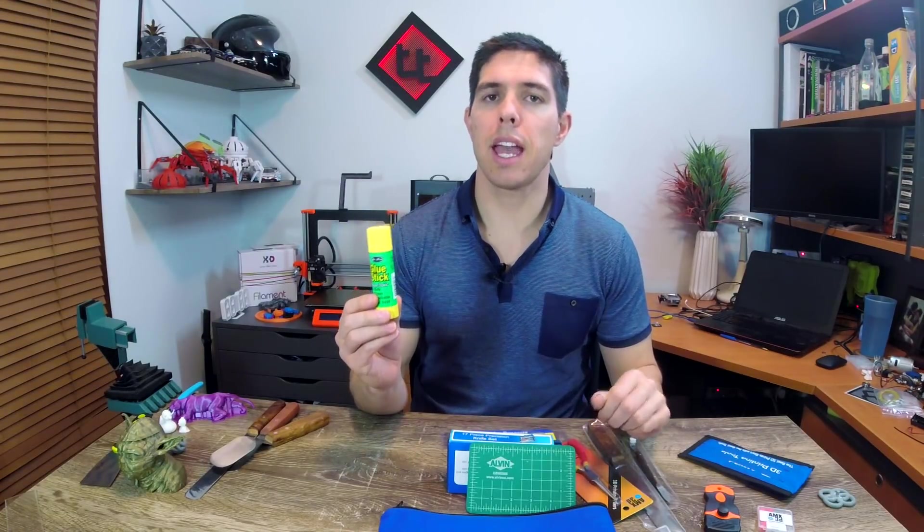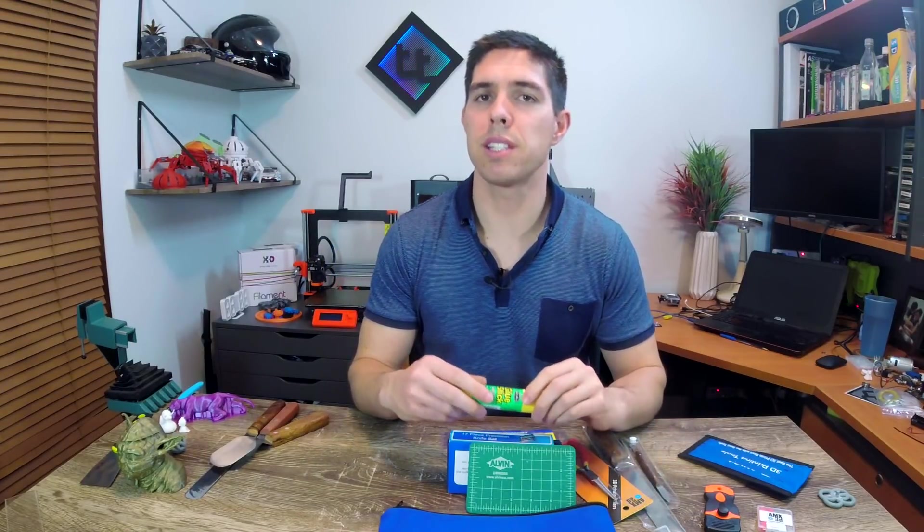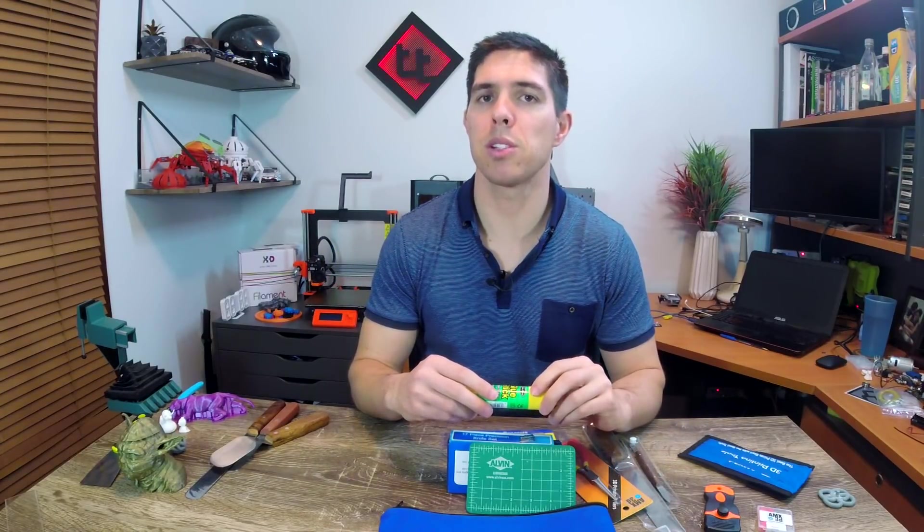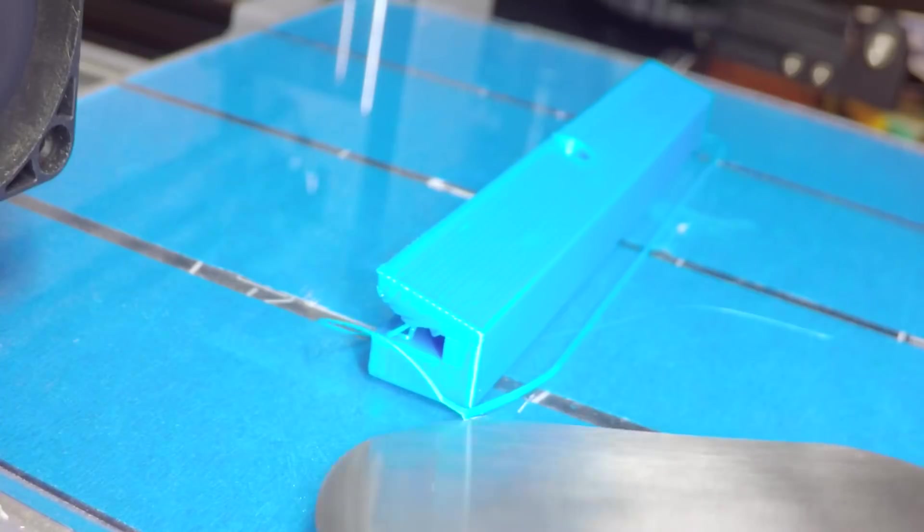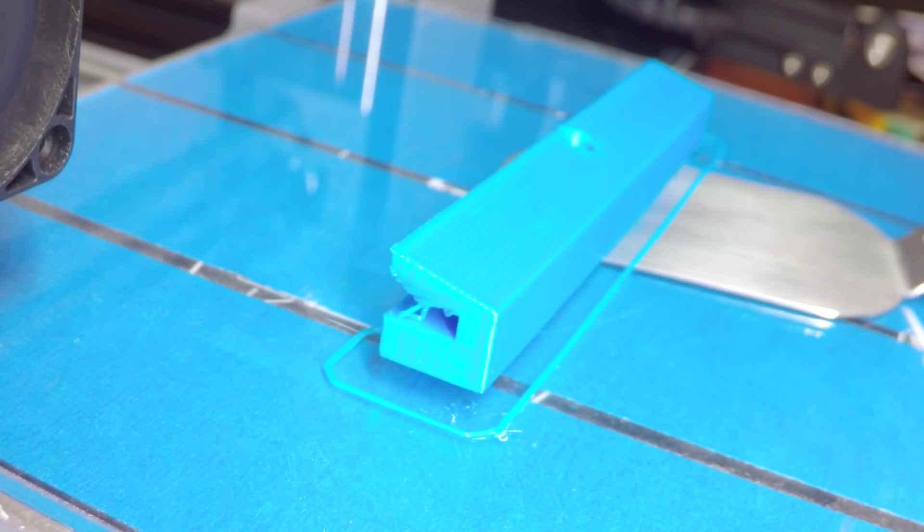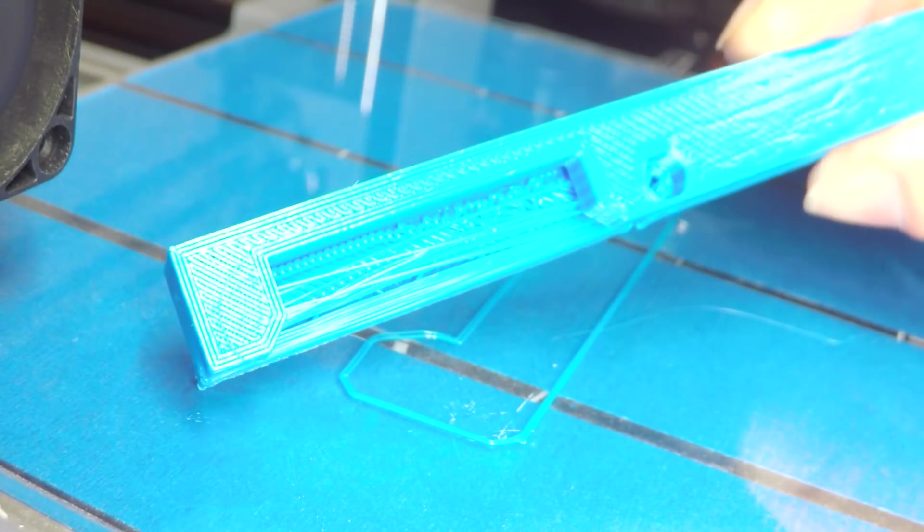We've got a glue stick and confession time, I've never actually printed with a glue stick before. I printed onto glass for years and years but that was always onto hairspray so this was my first time. I put down a sheet of glass on top of my bed, I put the glue down where I was expecting the print to be and fortunately it worked like it was meant to. The print stuck, it didn't peel up but it was still easy to get off at the end and as advertised it had a mirror-like glossy finish on the underside.